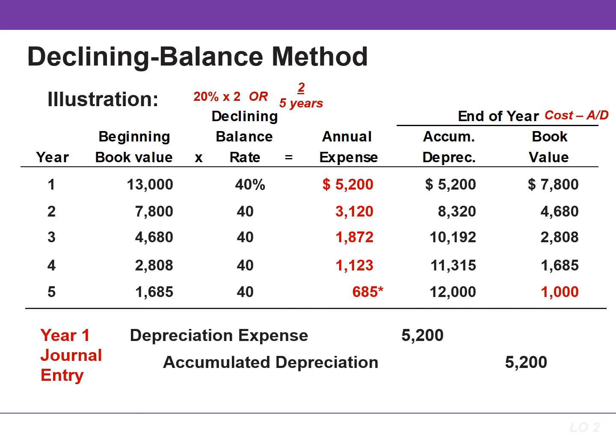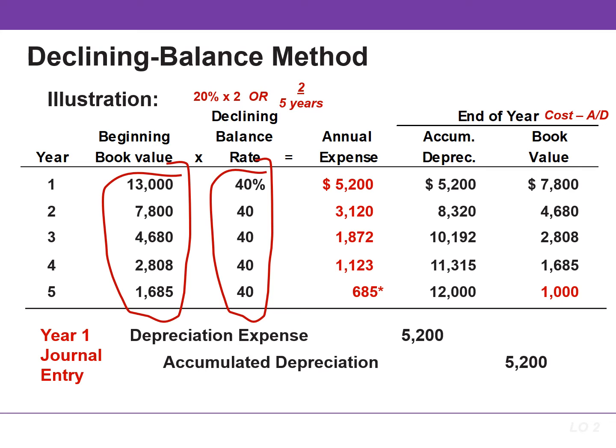This method calculates depreciation based on a declining book value. Annual depreciation expense is computed by multiplying the book value at the beginning of the year by the depreciation rate. The depreciation rate remains constant from year to year, but the book value to which the rate is applied declines each year.